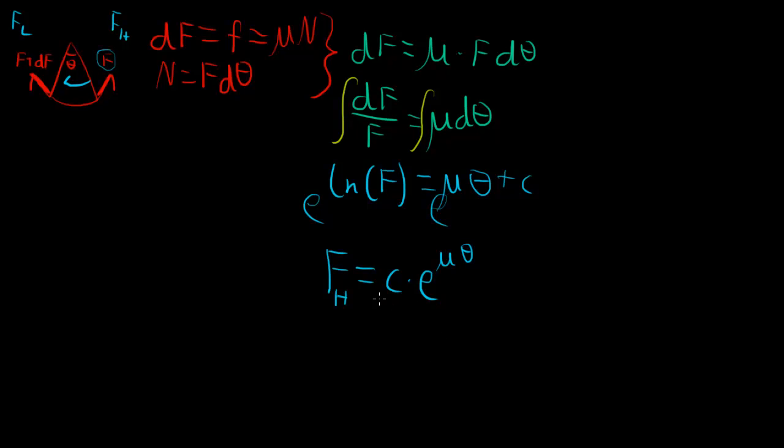Now, to determine this constant c, we need to think about the large scale problem again. We had the capstan, and over here we had some large load force. Over here we had some smaller hold force. We're measuring our angle from the hold force to the load force because of the way that I drew that. When our angle θ is 0, then we're looking right at the hold force. When θ equals 0, e to the 0 is 1. So the force that we get there has to be the hold force. So we have that c has to be the hold force.